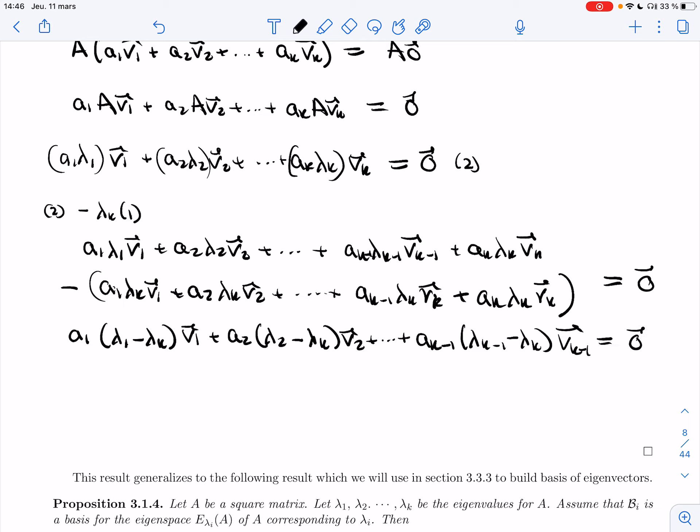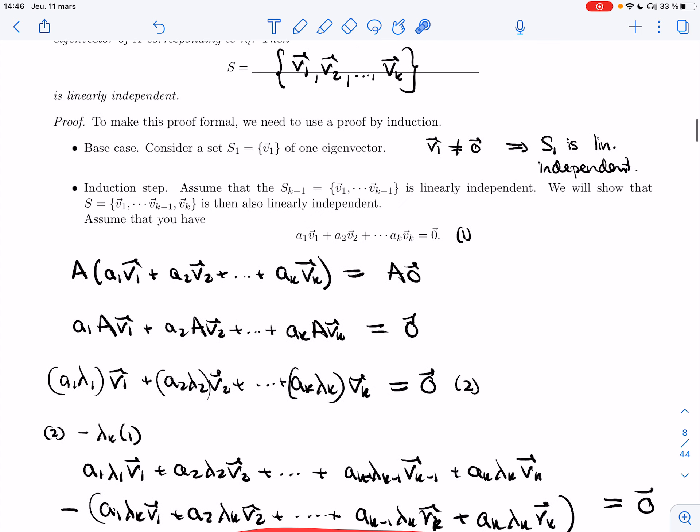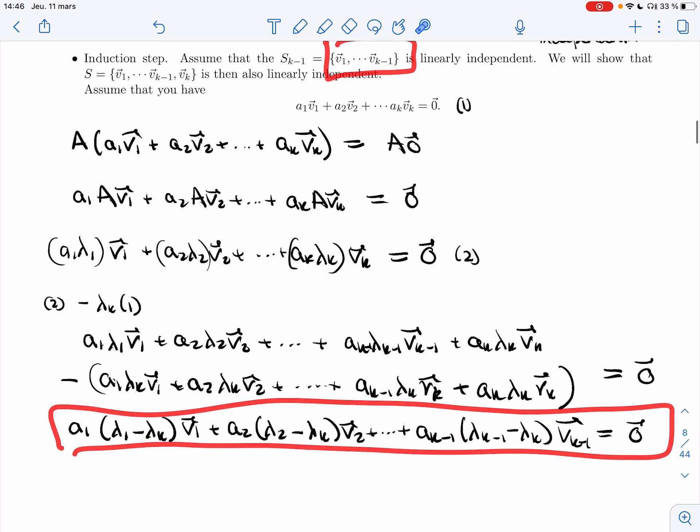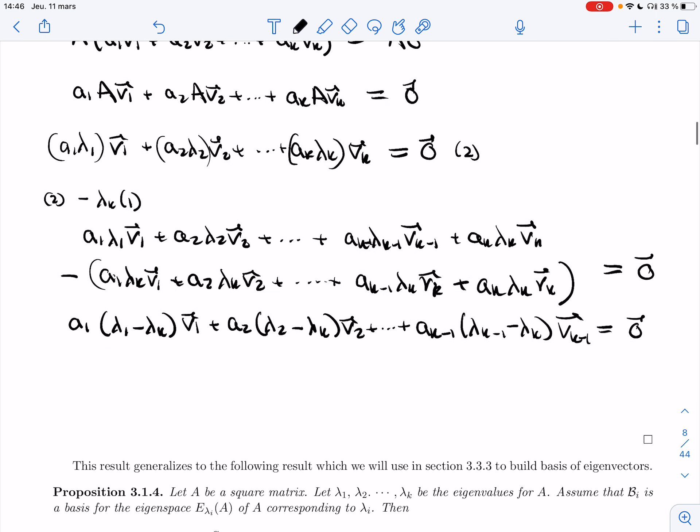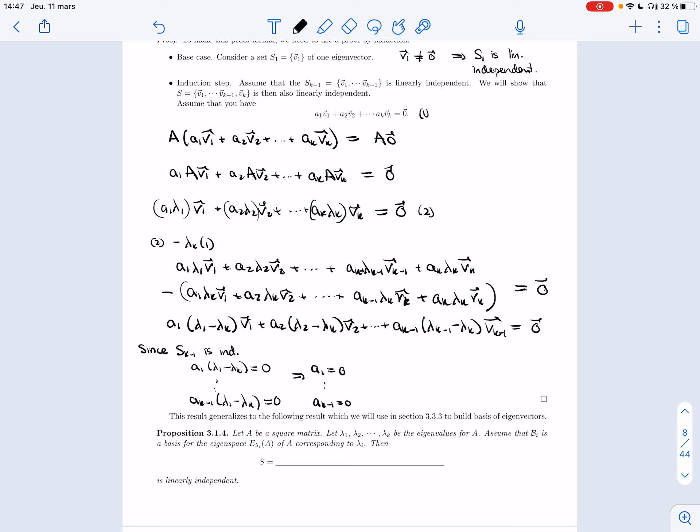on v_1 through v_{k-1}, which we are assuming is independent. And so if we have a dependence relation, all the coefficients must be zero. I have a_1(lambda_1 - lambda_k) = 0, and so on, up to a_{k-1}(lambda_{k-1} - lambda_k) = 0. But these are different, and so that part isn't zero, and so I'm getting that a_1 = 0, and a_{k-1} = 0. And so if I go back to this dependence relation, I get a_k v_k = 0, and so a_k is zero as well. And so yes, S is linearly independent.